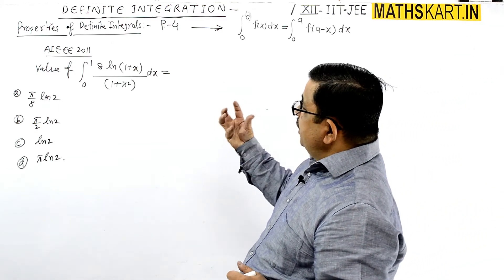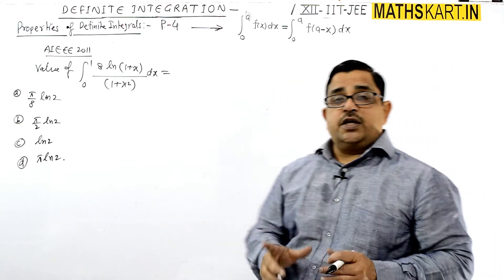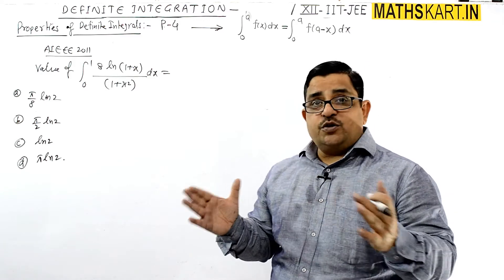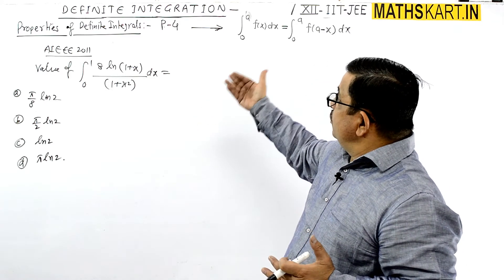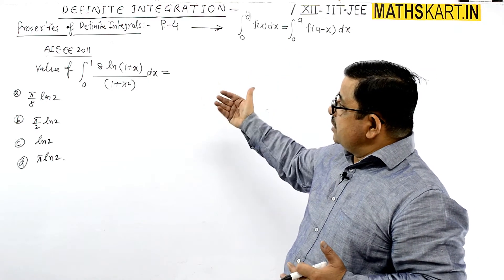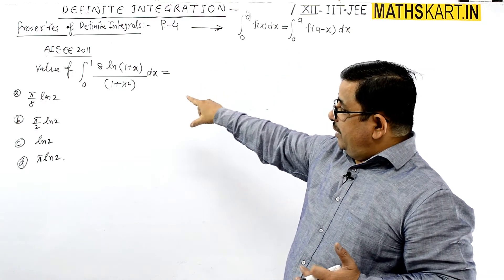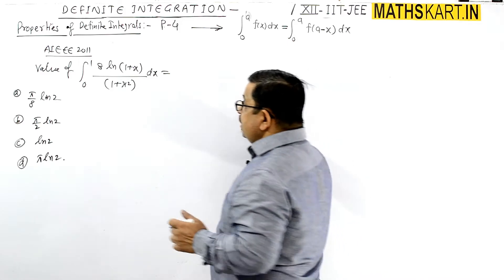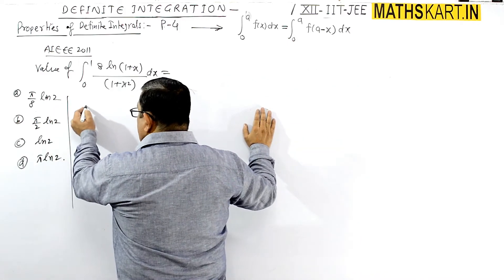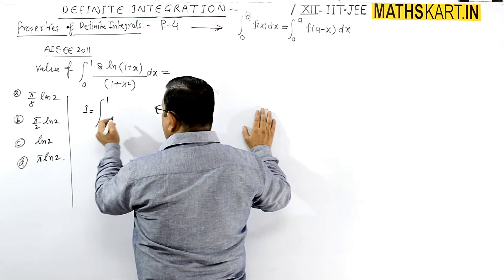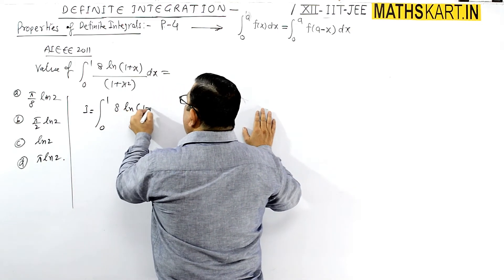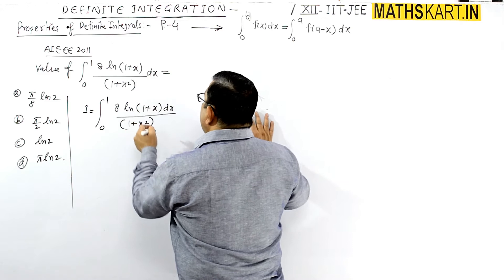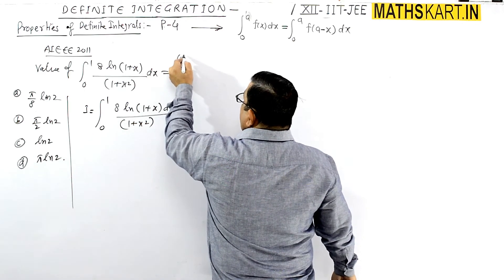Initially you can see that Property 4 cannot be directly applied here because substituting (1 minus x) does not cancel neatly. So we use the substitution x equals tan theta. The integral from 0 to 1 of 8 ln(1 plus x) divided by (1 plus x squared) — with x equals tan theta, dx equals sec squared theta d theta.